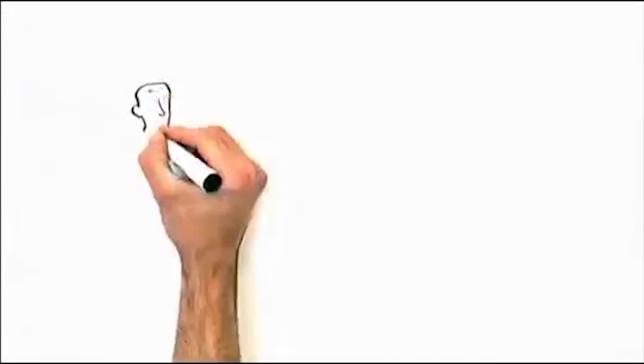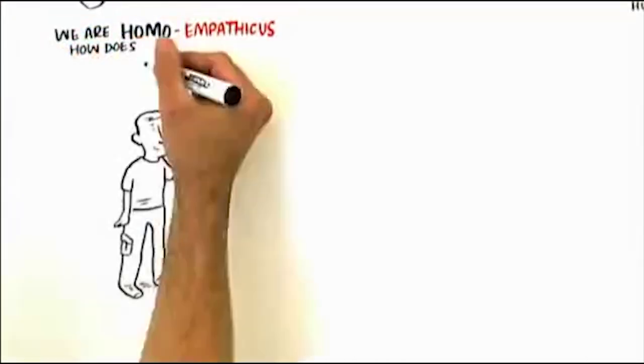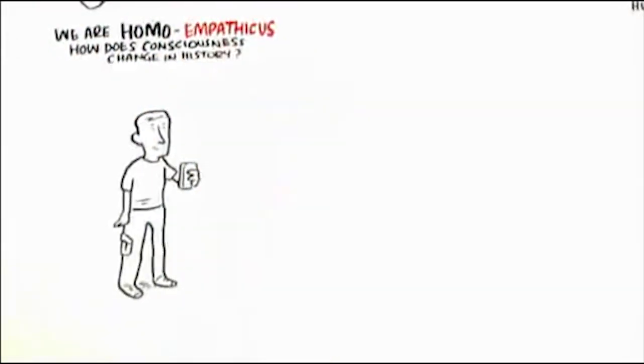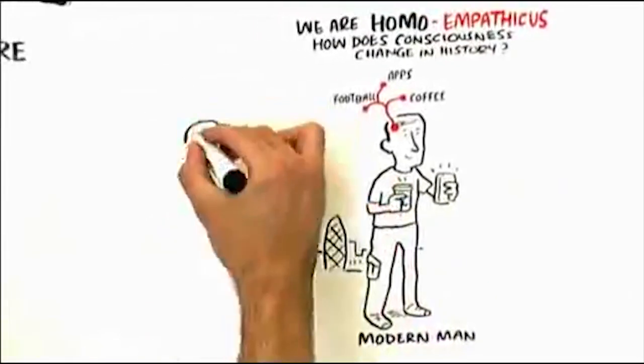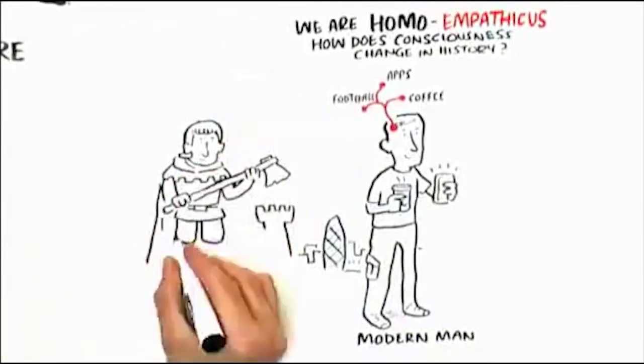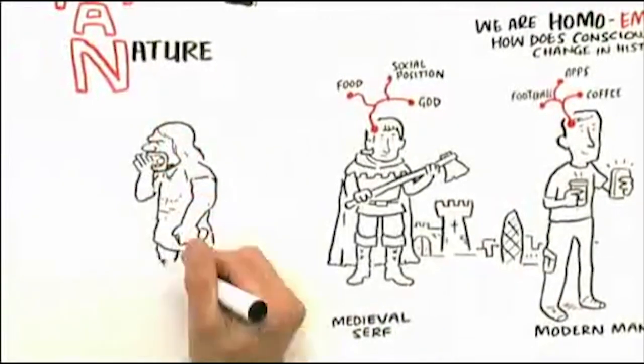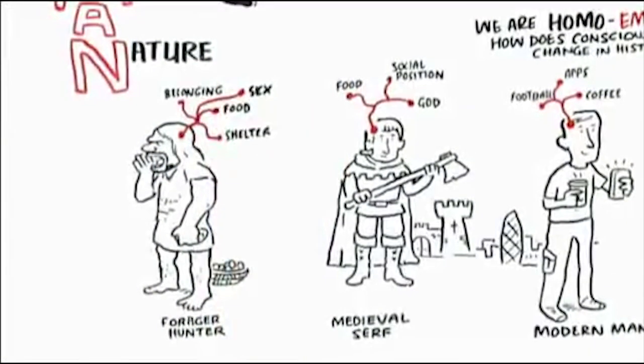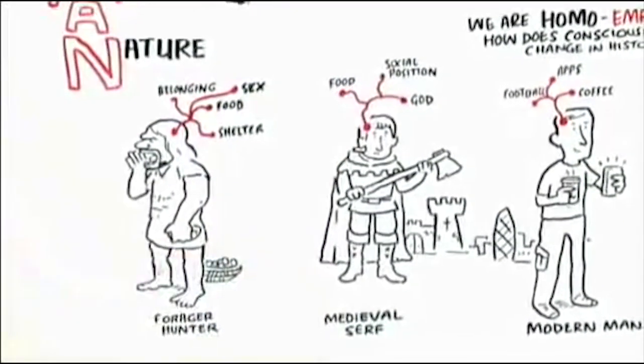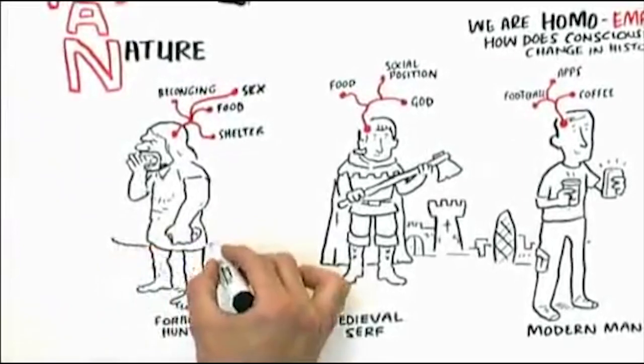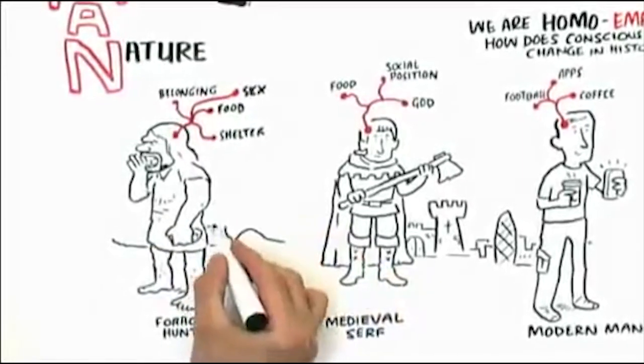We are homo empathicus. So here's the question. We know that consciousness changes in history. The way our brain is wired today is not the way a medieval serf's brain would be wired, and their brain wouldn't be the same as the wiring of a forager hunter 30,000 years ago. So the question I asked at the beginning of this study six years ago is, how does consciousness change in history?